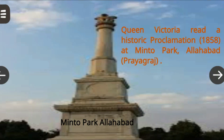The British government took charge of the administration of India and Queen Victoria was declared as the Empress of India. Queen Victoria read a historic proclamation at Minto Park, Allahabad. It was related to Indian administration.